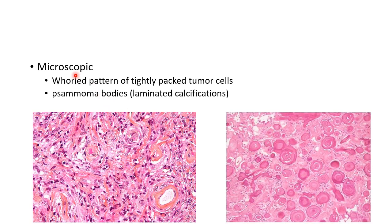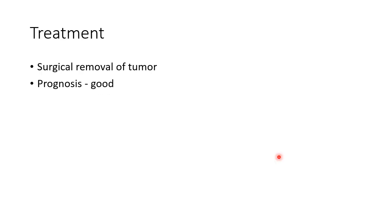Let us see about the microscopic features of meningioma. It shows a whorl pattern of tightly packed tumor cells. This picture shows the whorl pattern in meningioma. There will also be psammoma bodies, which are laminated calcifications. This picture shows psammoma bodies.